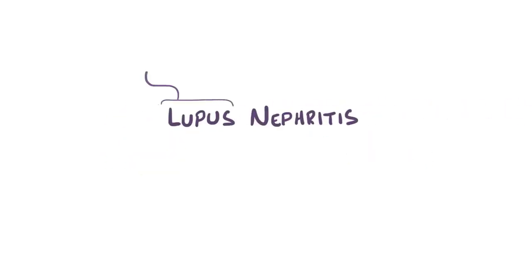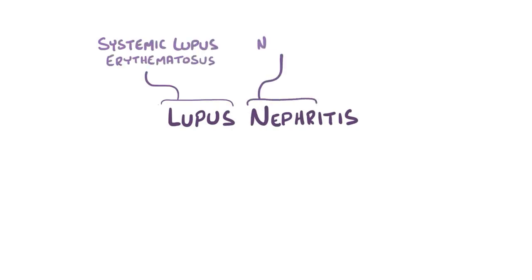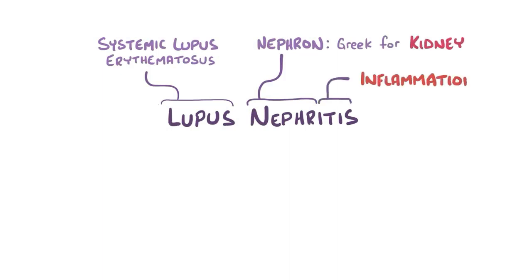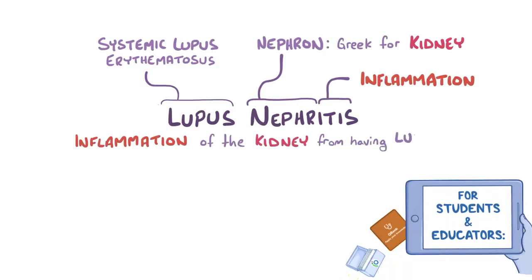The term lupus refers to systemic lupus erythematosus. Nephritis refers to the nephron, the Greek word for kidney, and itis means inflammation. So lupus nephritis refers to inflammation of the kidney that results from having systemic lupus erythematosus.